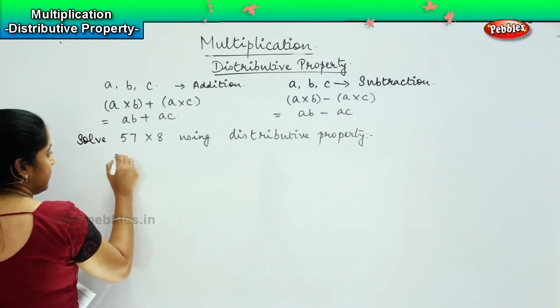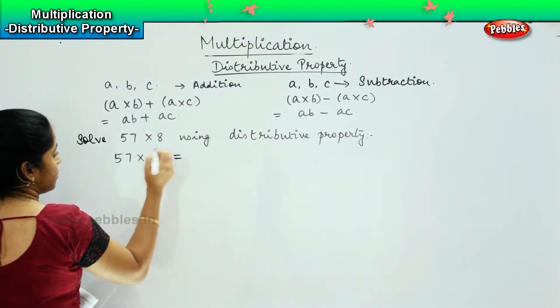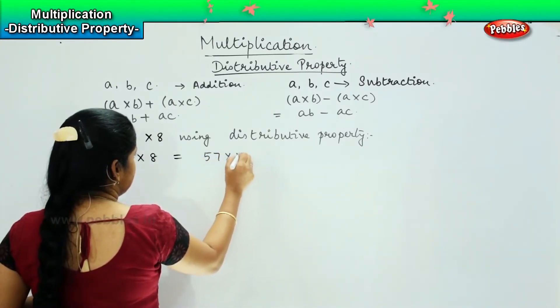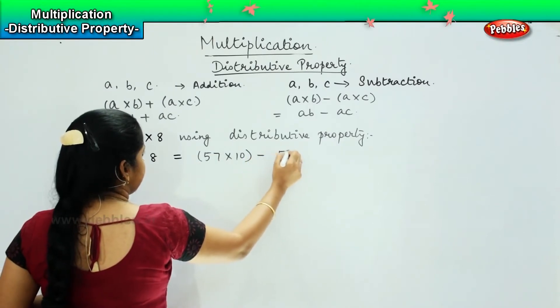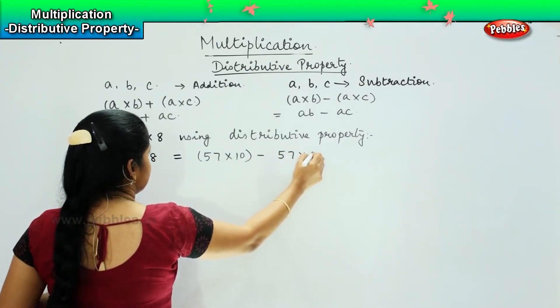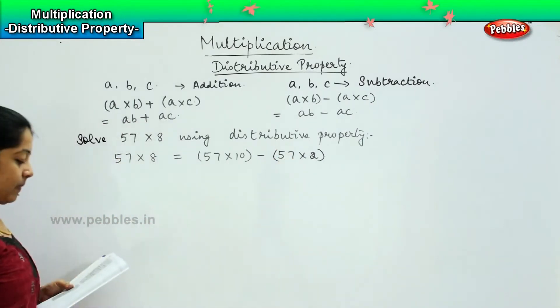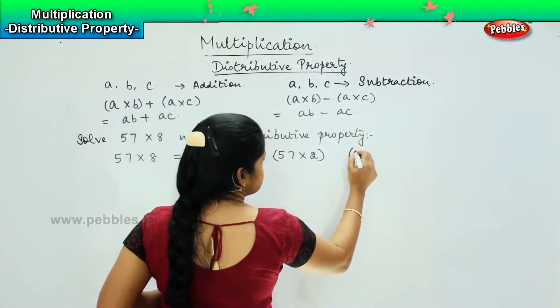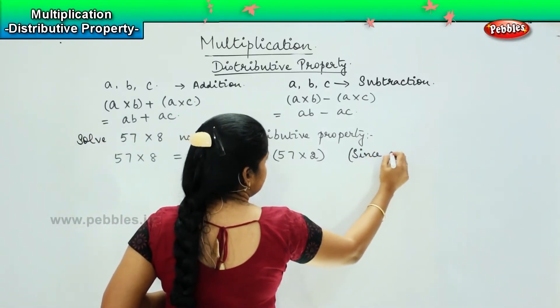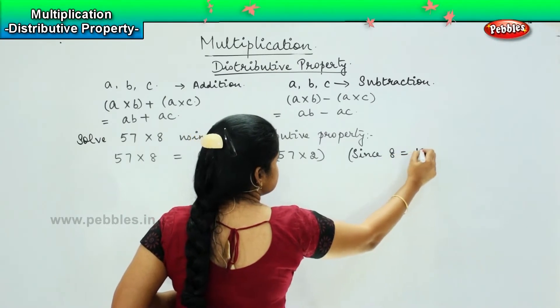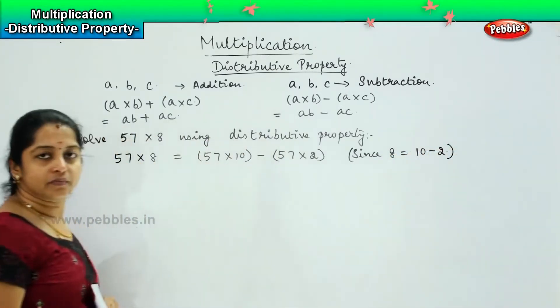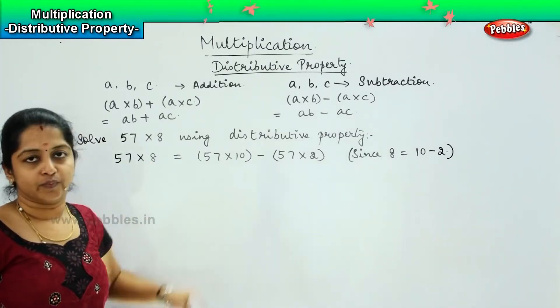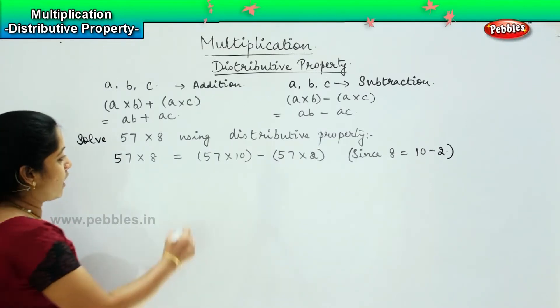Now, 57 into 8 can also be written as 57 into 10 minus 57 into 2. Why? Because we can write since 8 can be written as 10 minus 2. So, instead of writing it 8, I will split it as 10 and 2. End of the day, I will get the answer as same.